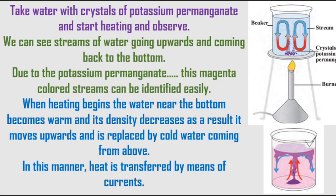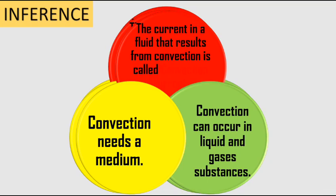We can see colored streams of water going upward and coming back to the bottom — the potassium permanganate makes these streams easy to identify. When heating begins, the water near the bottom becomes warm, its density decreases, and it moves upward, replaced by cold water from above. Heat is thus transferred by convection currents. We can infer: convection needs a medium and can occur in liquids as well as in gases.